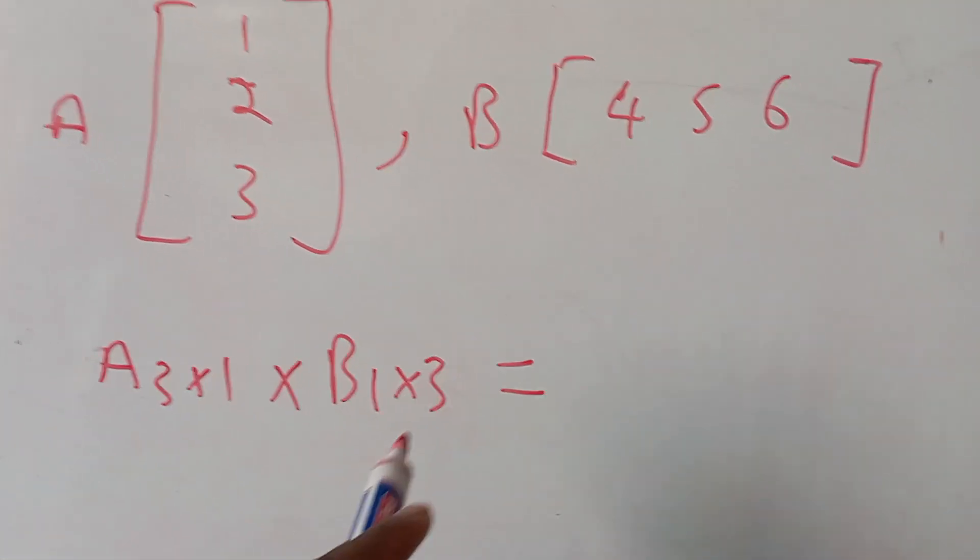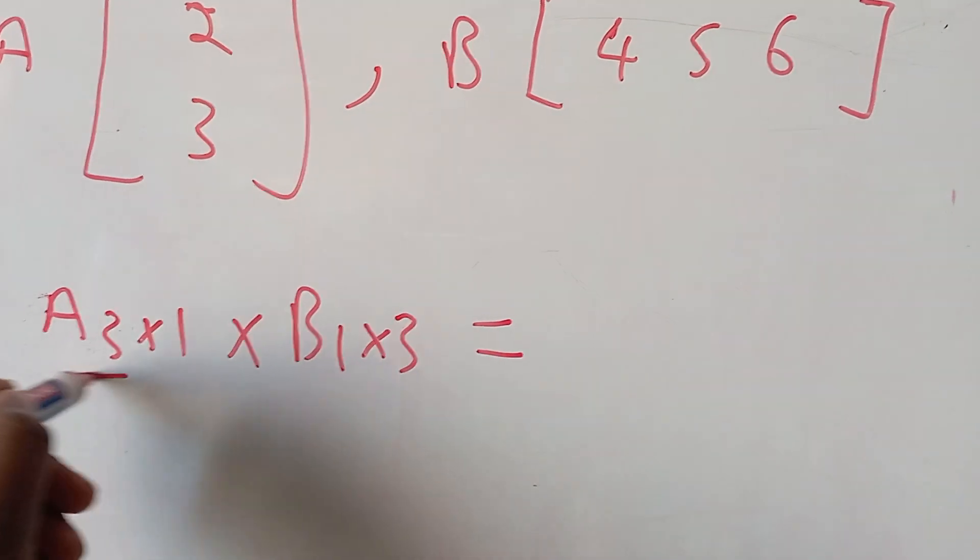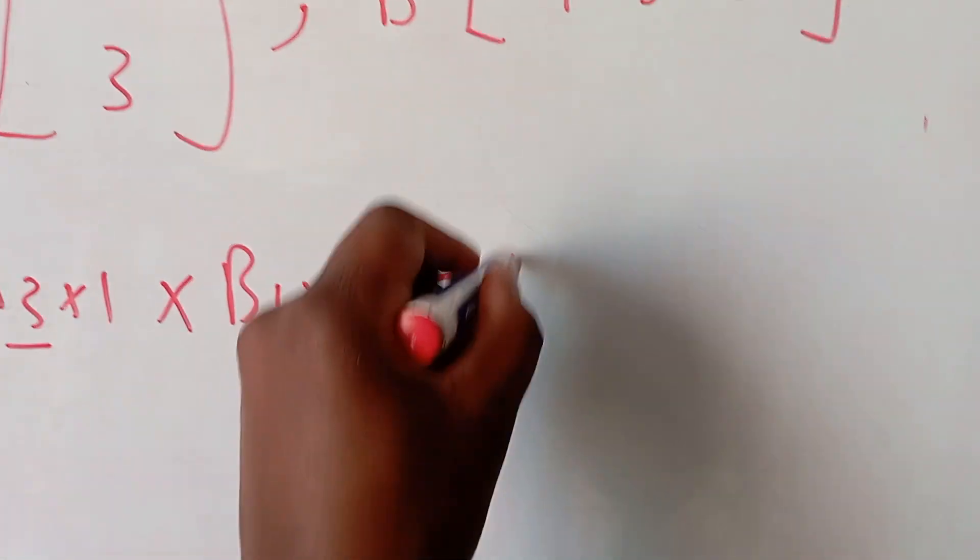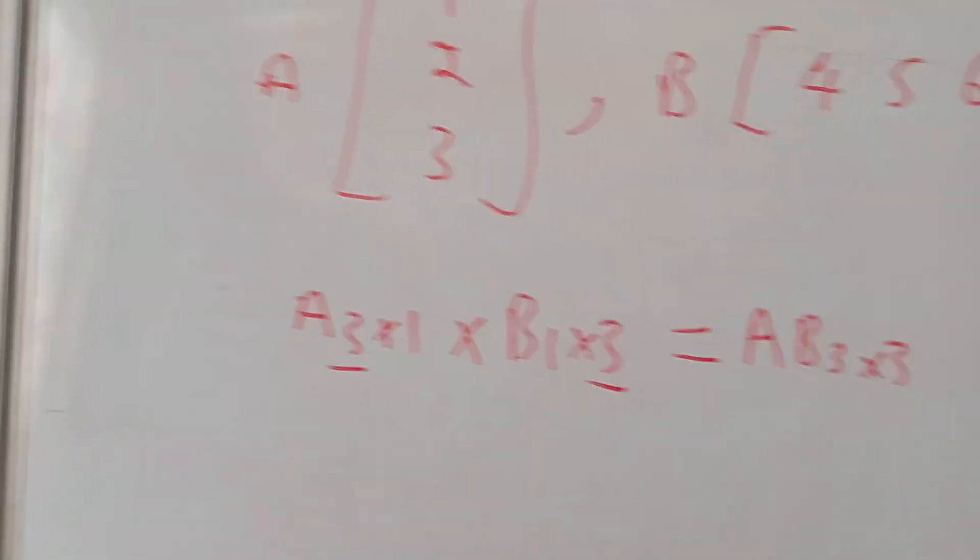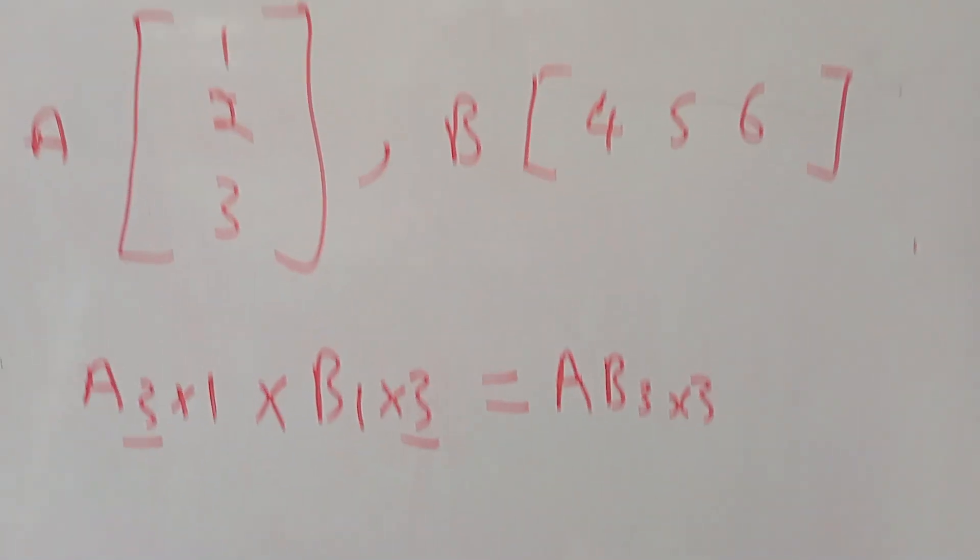Multiplying a 3 by 1 times a 1 by 3 gives us - we check here - the resultant matrix AB is a 3 by 3. So the product of A and B gives us a 3 by 3 matrix.